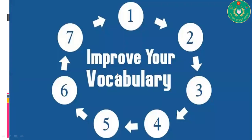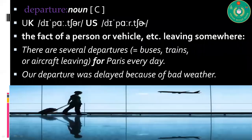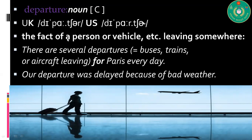Before that, let's improve some vocabulary. The first word is 'departure' — it's a countable noun. UK pronunciation: departure. US pronunciation: also departure. Its meaning is the fact of a person or vehicle leaving somewhere. Example: 'There are several departures — buses, trains, aircraft, etc. Our departure was delayed because of bad weather.'